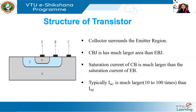For an NPN transistor operating in the normal active mode, the emitter-base junction should be forward biased and the collector-base junction should be reverse biased. Observing the energy band diagram, the forward bias of the emitter-base junction lowers the emitter-base potential barrier, whereas the reverse bias of the collector-base junction increases the collector-base potential barrier. Under forward bias, lowering of the potential barrier at the emitter junction results in injection of electrons into the base and holes into the emitter.